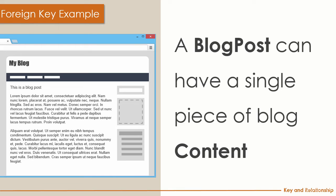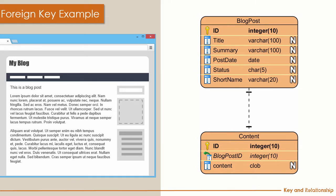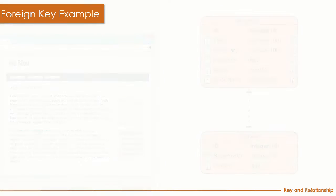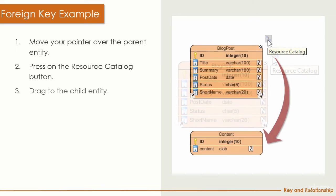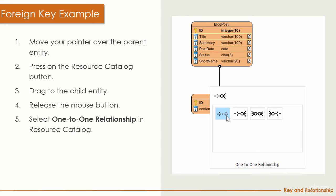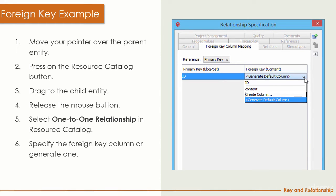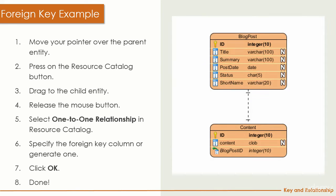For the one-to-one relationship — for example, a blog post and its content: the blog post has header information shown on the start page, and we don't need to load the whole content, so we store the long content in a separate table to delay loading and make the initial load faster. The blog post has ID, title, summary, post date, etc., and the content is stored in a content table with just the long text. To create a one-to-one relationship, similarly use the resource catalog drag-and-drop and select the one-to-one relationship option, then pick the foreign key column or generate one as default.